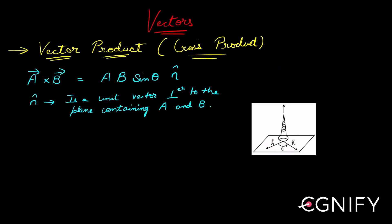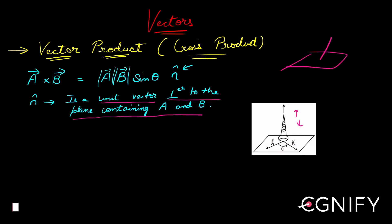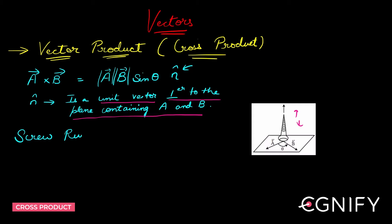So we need to find the direction of n cap. The formula is: a cross b = |a||b| sin theta times n cap, where n cap is a unit vector perpendicular to the plane containing a and b. The question is whether it goes above or below the plane. To find that, we use something called the right-hand screw rule.